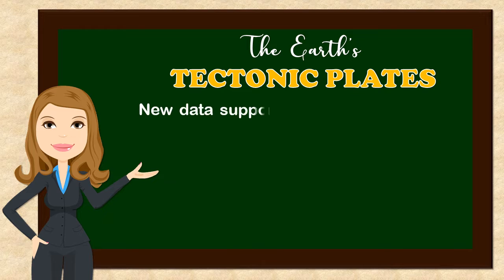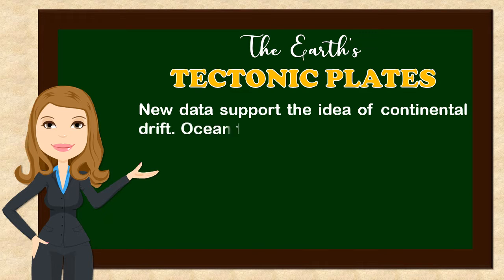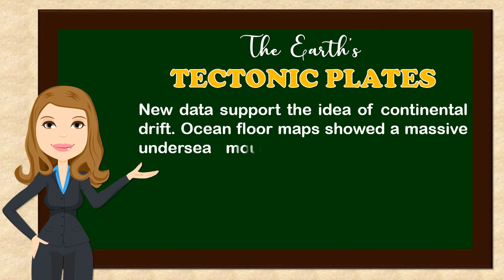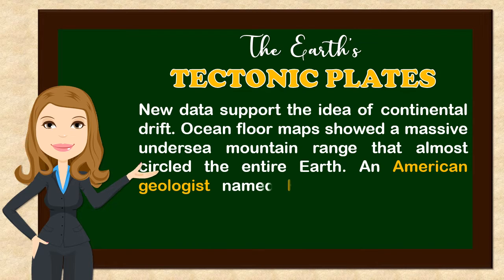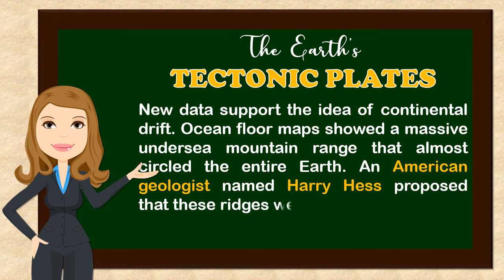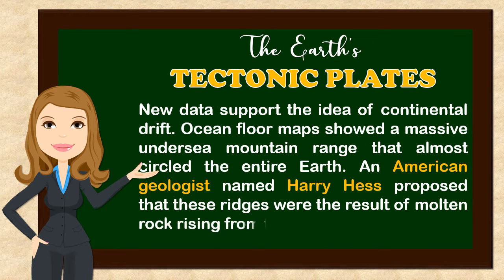New data supported the idea of continental drift. Ocean floor maps showed a massive undersea mountain range that almost circled the entire Earth. An American geologist named Harry Hess proposed that these ridges were the result of molten rock rising from the asthenosphere.